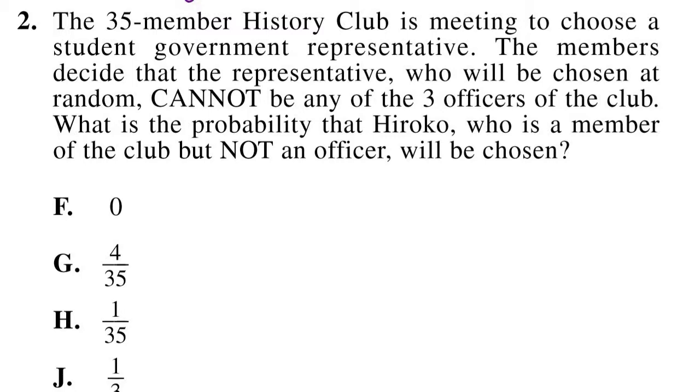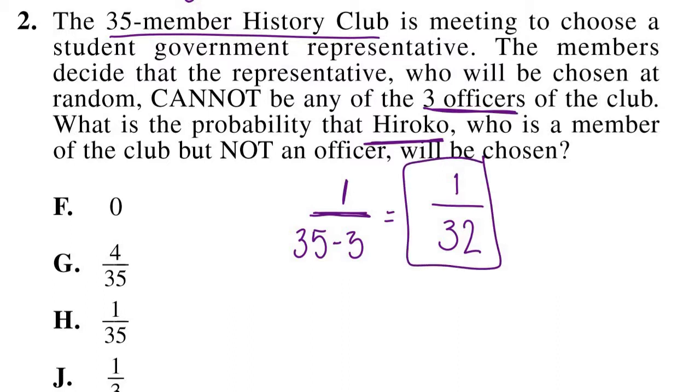So we know that we're trying to figure out the probability of 1 Hiroko being chosen out of how many? Well, we know we have 35 members in the history club, but we can't choose any of the 3 officers. So we have to do 35 minus 3, which we then simplify to 1 over 32. And that's our answer. That's the probability that Hiroko will be chosen out of the 32 possible members that could be chosen as an officer.